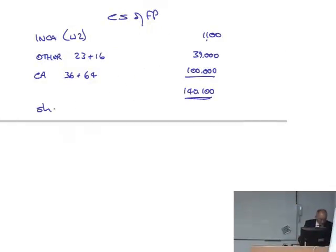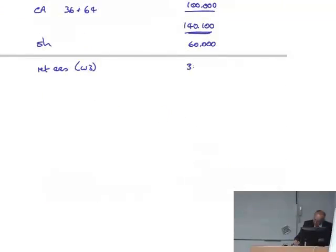Shares always was only ever the parent. Retained earnings we've actually calculated that in working 3. 38,040. NCI we've done a calculation in working 4.